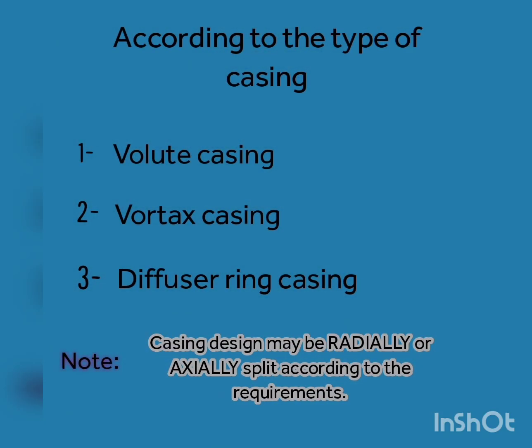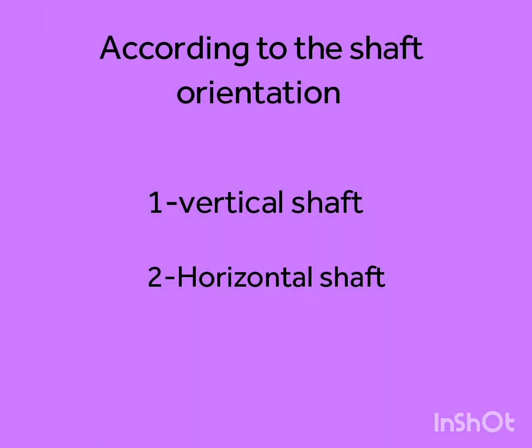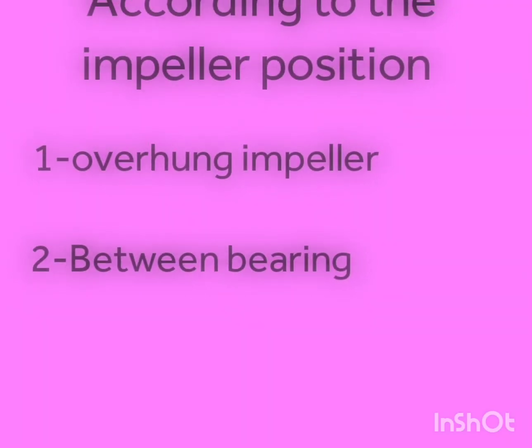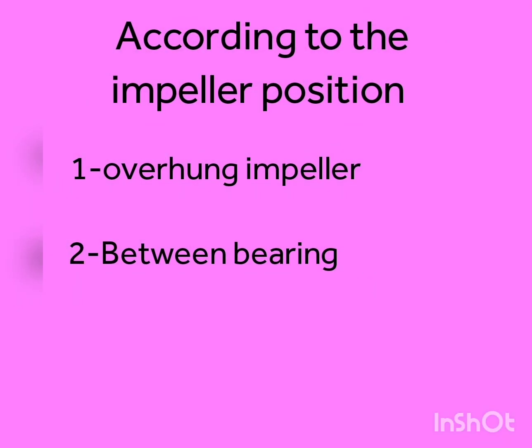According to the type of casing — volute casing, vortex casing, diffuser ring casing. Note: casing design may be radially or axially split according to requirements. According to shaft orientation — vertical shaft, horizontal shaft. According to impeller position — overhang impeller and between bearings.